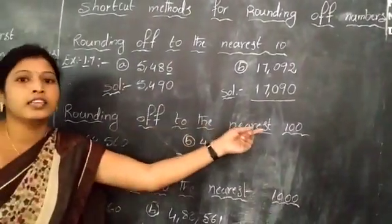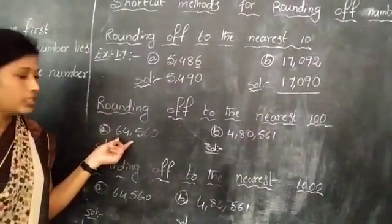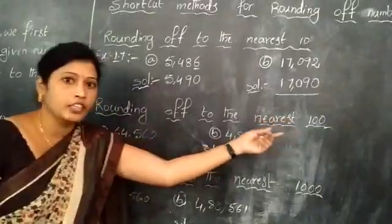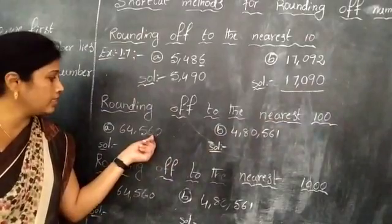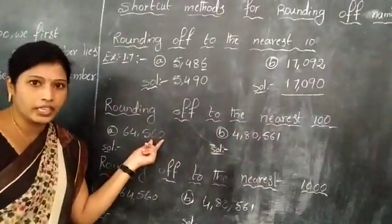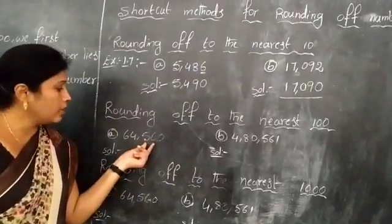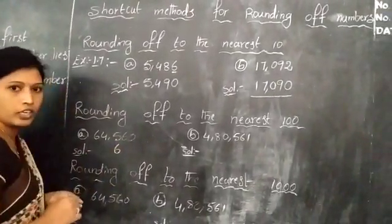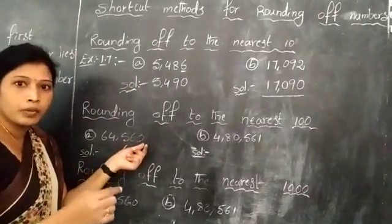Now, rounding to the nearest 100. See the first question: 64560. We need to observe the 10's digit and 1's digit. The combined value 60 is more than 50. So the 100's value increases by 1, and the 10's and 1's values are replaced with 0.